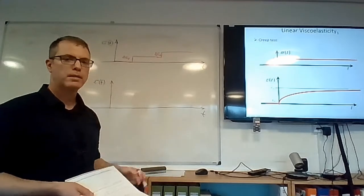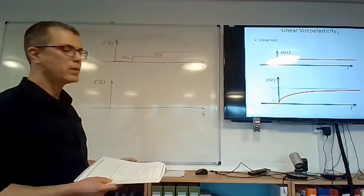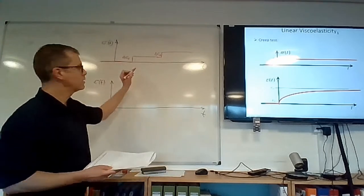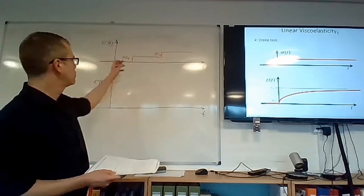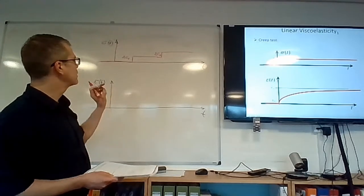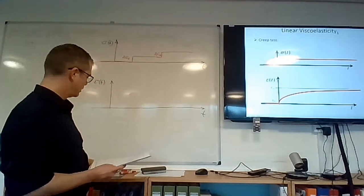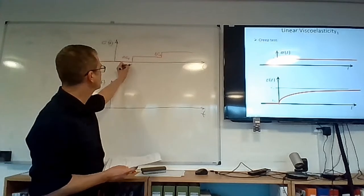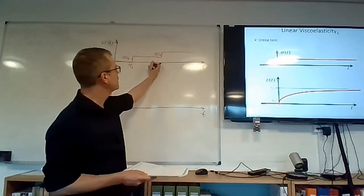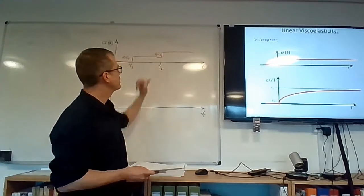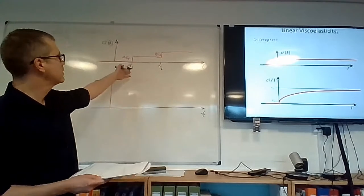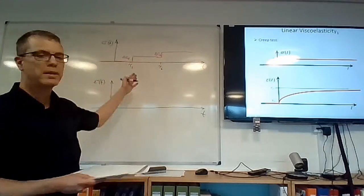Let's make this more clear with a complex stress history. What we have here is a material that is exposed — this is still a 1D case — to two step stresses. Let's say that the first stress was applied when time was equal to tau-1, and then the second stress occurred when time was equal to tau-2. I'm using a different parameter for time just to express when the loads were applied.